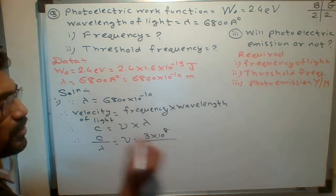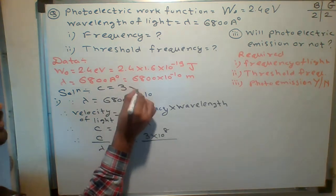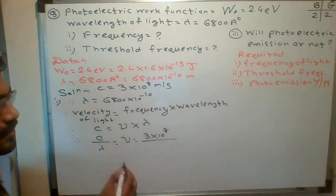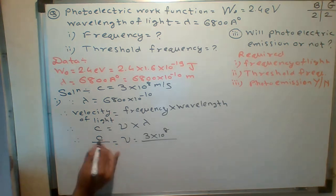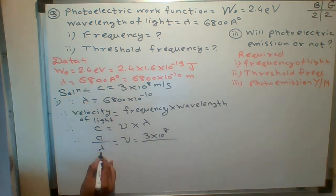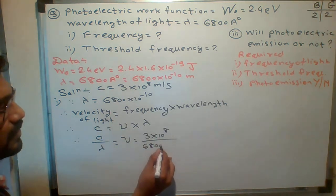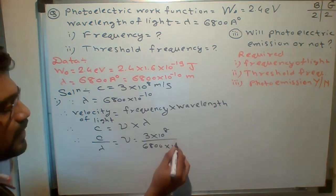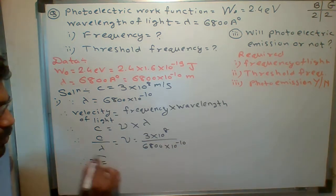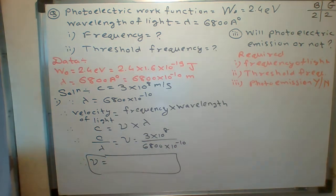The value of c is 3 into 10 to the 8 meters per second — if not given, you must consider this standard value. So frequency ν equals 3 into 10 to the 8 divided by 6800 into 10 to the minus 10. Now calculate the value of ν.